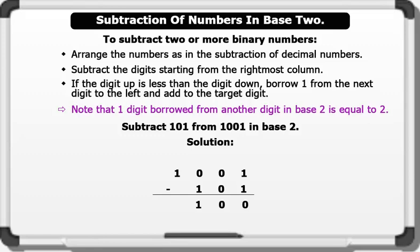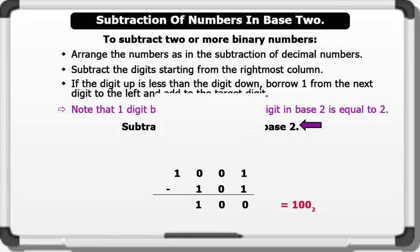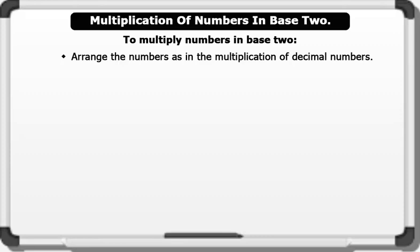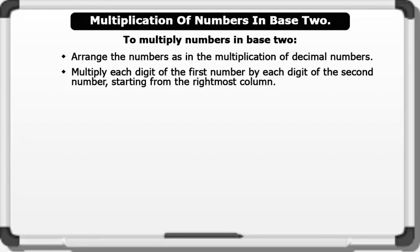Therefore 1 0 0 0 1 minus 1 0 0 1 in base 2 equals 1 0 0 in base 2. To multiply numbers in base 2, arrange the numbers as in the multiplication of decimal numbers. We multiply each digit of the first number by each digit of the second number starting from the rightmost column, then we add up the results.